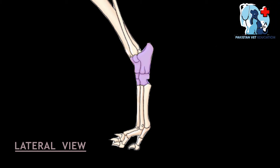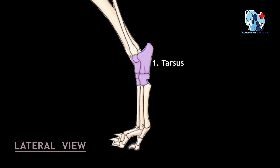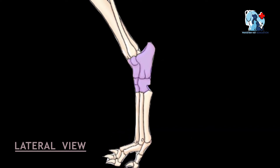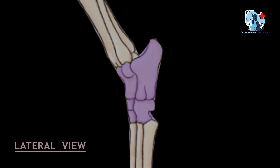Welcome to the Pakistan Veterinary Education. I am Talha Shafiq and today we are going to discuss the tarsal bones of dogs that are present in the pes region. Basically, the pes region contains three types of bones: tarsus, metatarsus, and digits. In this video, we will discuss the anatomy of tarsal bones.